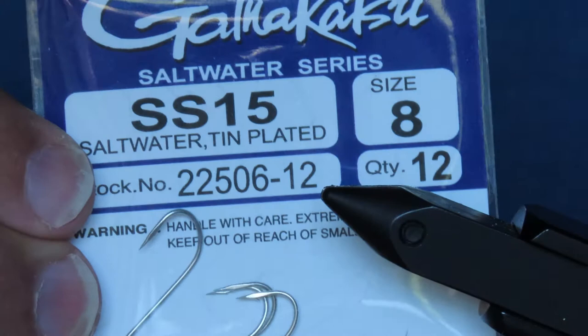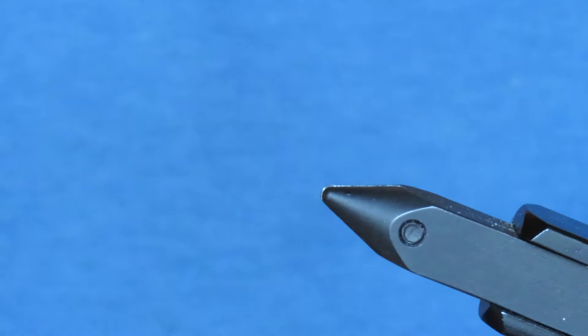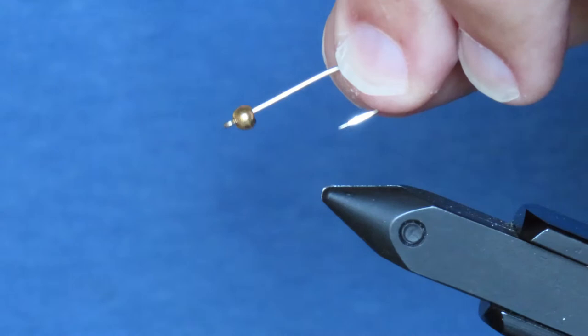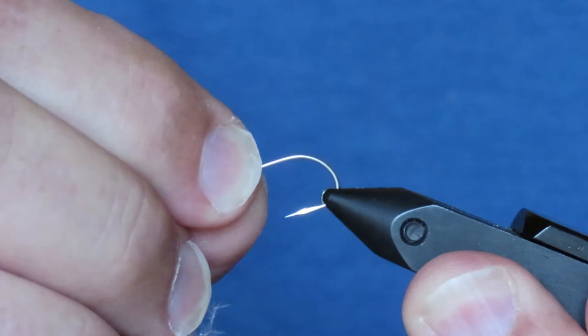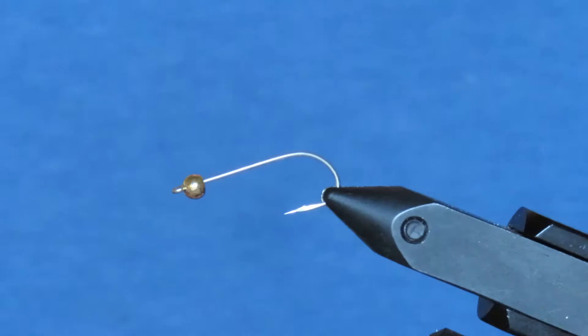My hook for this is a Gamakatsu SS-15 saltwater hook in size 8. Now you don't want to make this any larger than a size 8. I've got one here where I've already pinched down the barb and I've added a 1/8 inch gold bead. I'm going to clamp my hook in with the eye pointing downwards so that the bead doesn't bounce its way back along the shank when I make my thread base, which really irritates me.